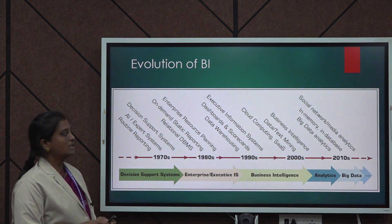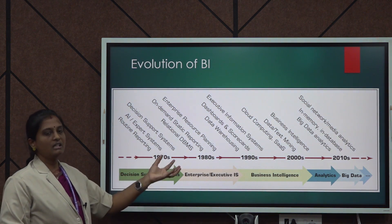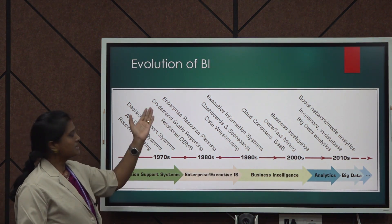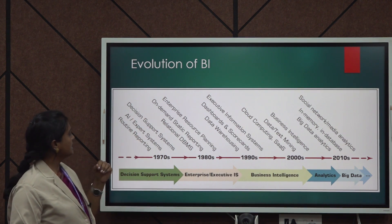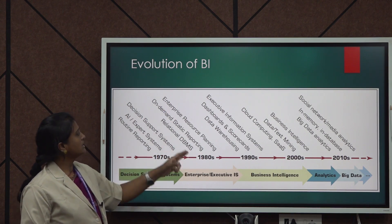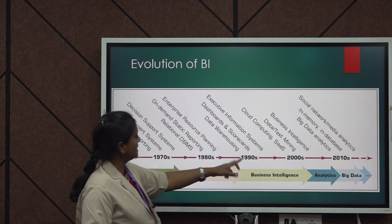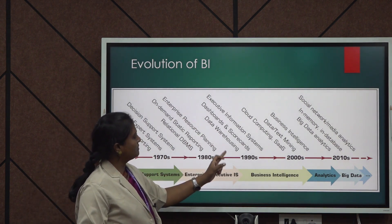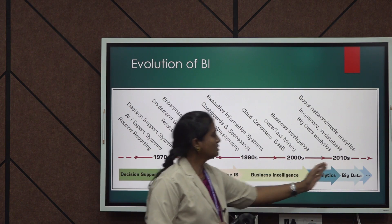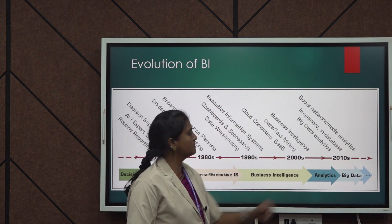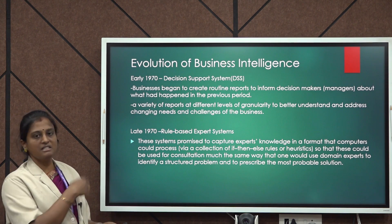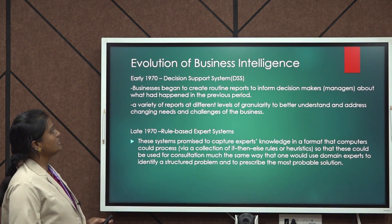Business intelligence is a current technology, and it has evolved since 1970. In 1970 it was termed a decision support system; in 1980, enterprise resource planning and data warehousing; in 2000, business intelligence; and in 2010, analytics and big data. So we can see the evolution of BI across these decades.